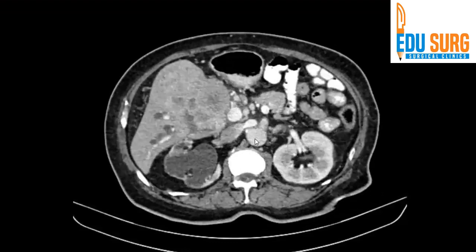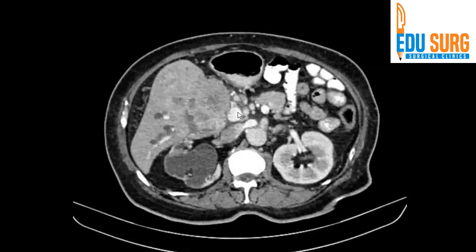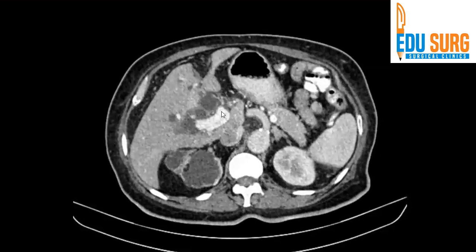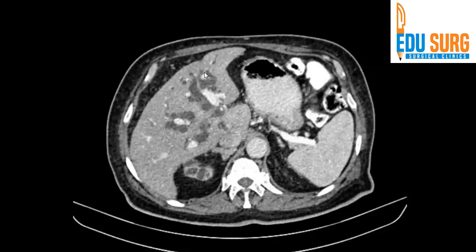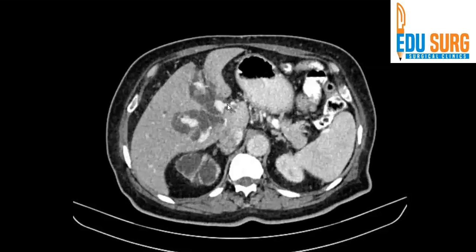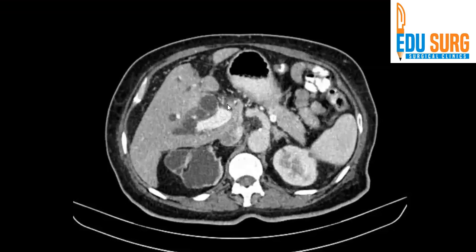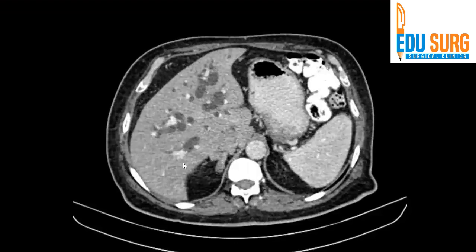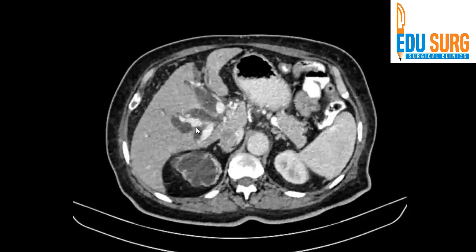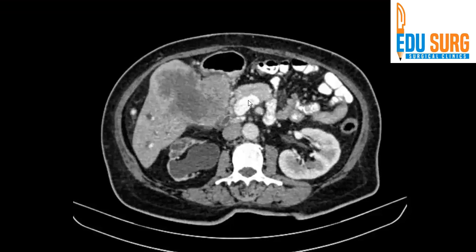In the portal phase, check if the portal vein is involved by the mass — it is not. Trace it to the mass and you will see up to the bifurcation. This is the bifurcation, this is the left portal vein, and these are branches to segment 2, 3, and segment 4. You can see the right anterior and posterior portal vein and the left portal vein — all are free. So the portal vein is free from the tumor.